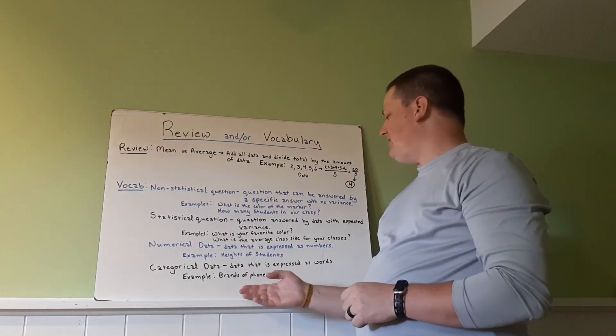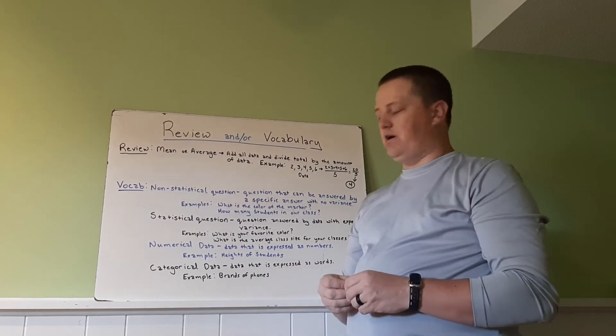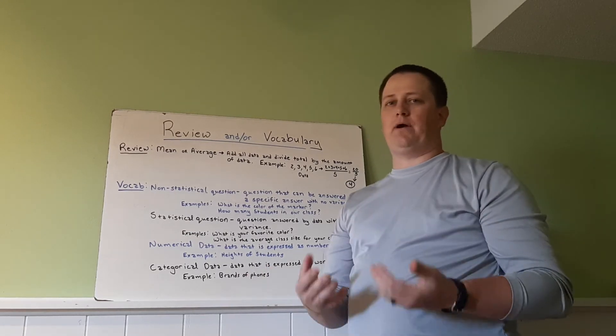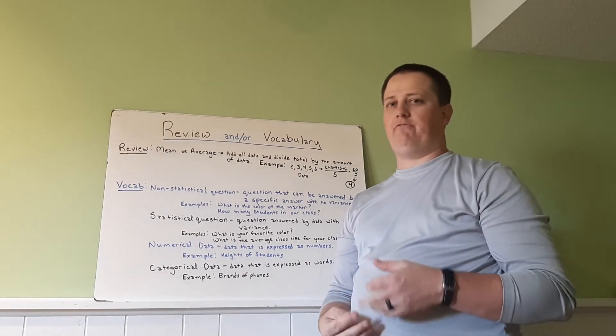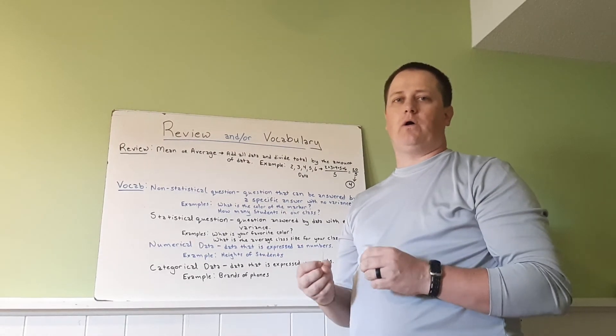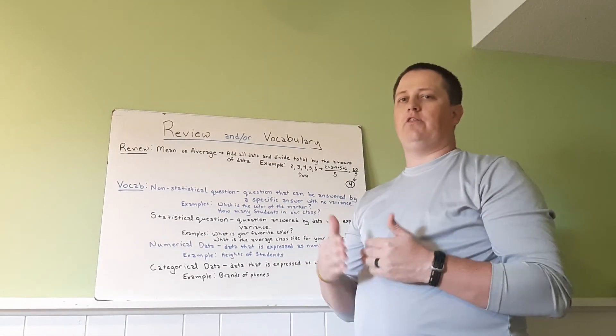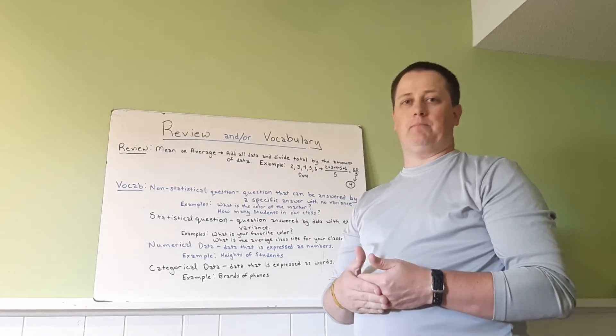Categorical data is data that is expressed as words. An example would be the brands of phones that you may have, whether it be a Samsung or an Apple. Whatever the brand is, those are used as words. They're not numbers.